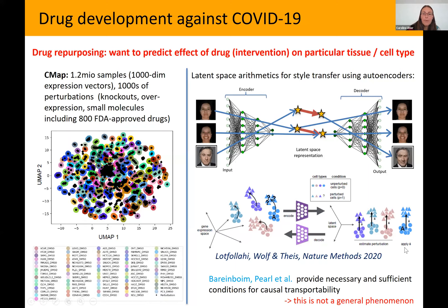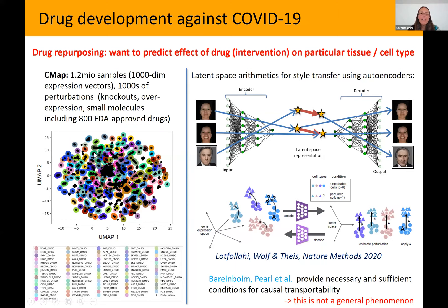We wondered whether this works in general. We know from causality — from Bar and Boyne-Pearl's work — that there are necessary and sufficient conditions for this causal transportability problem to work, so you cannot expect it to always work. Here we have the CMAP dataset to test it on many different cell types. In general, this doesn't work, and I'll show some intuition for why.